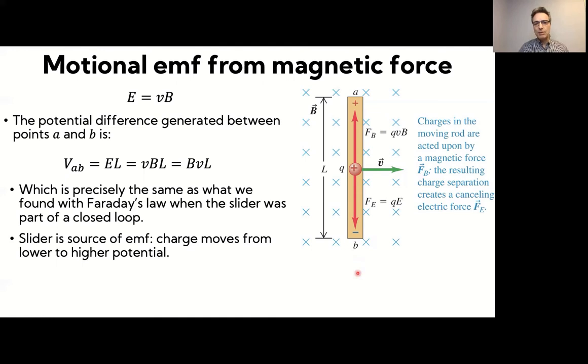So just like a battery, in a battery as well, what you have is the current flows in a normal circuit. The current flows through the battery from the lower potential to the higher potential. It is the battery that is causing this electromotive force that's raising the potential of the charges. Here we're doing the same thing. We're raising the potential of the charges in that conductor by essentially moving it through a magnetic field.